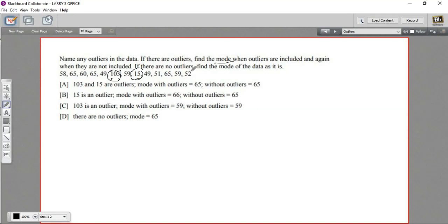Now here, the mode, it's actually not going to change when we exclude the outliers. The mode, remember, is just the value that appears the most often. So let's look for that. I'm seeing a lot of 65s. One, two, three. Did I get them all?